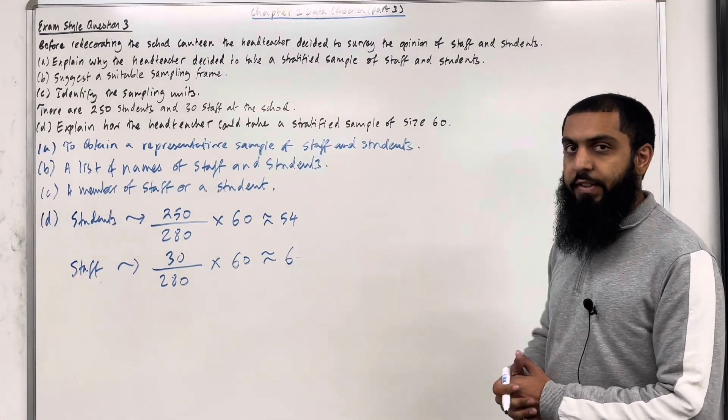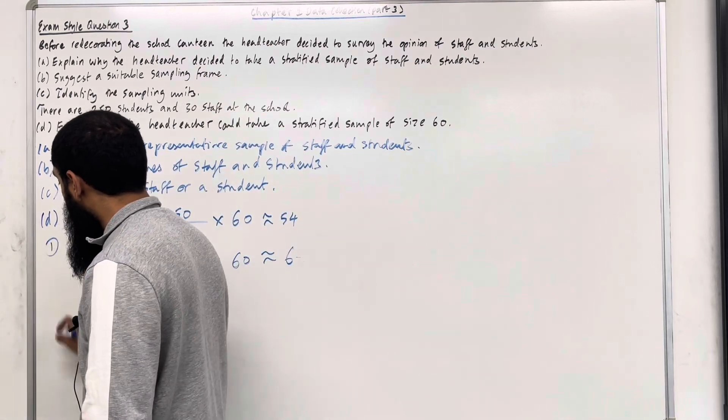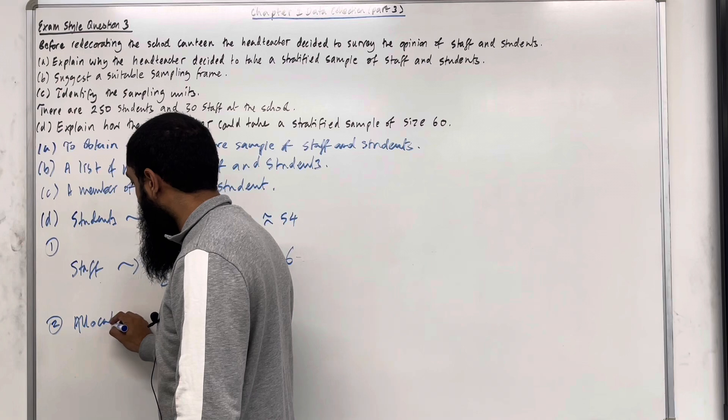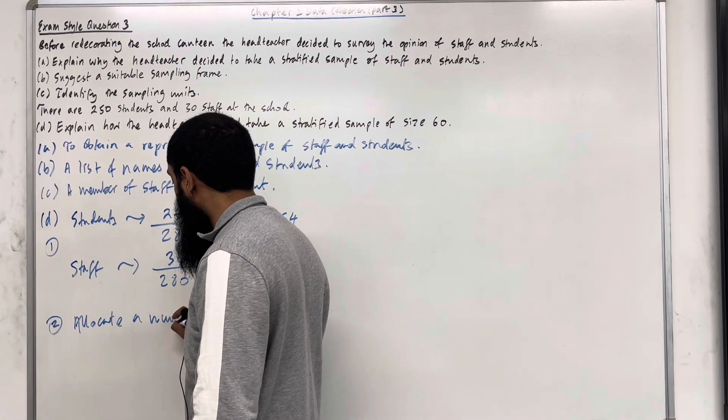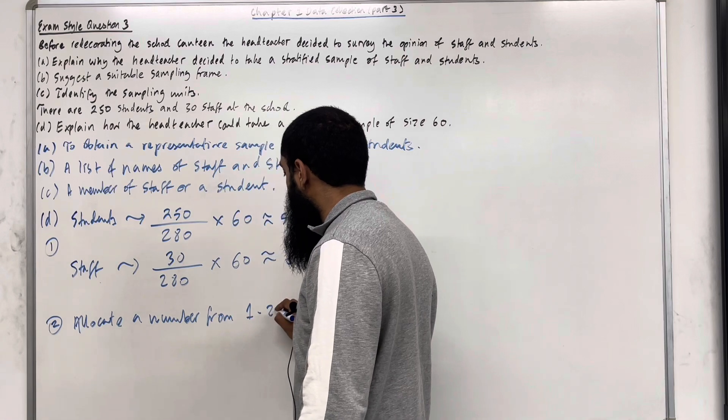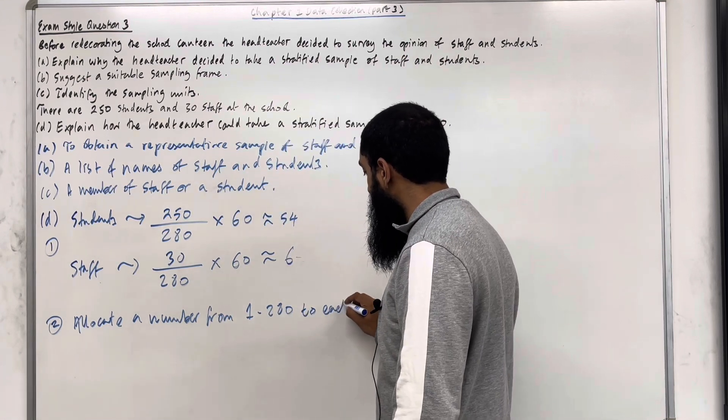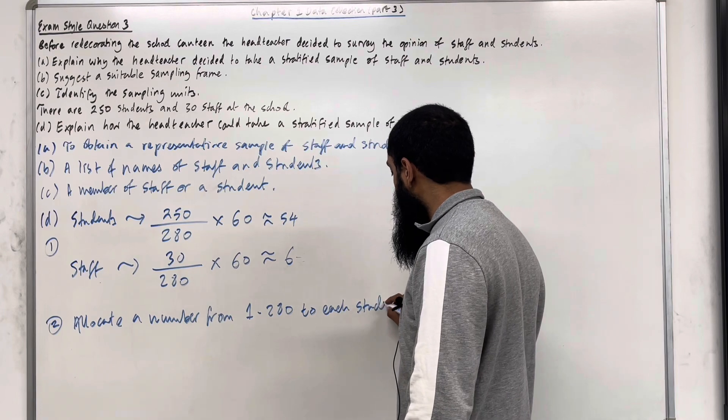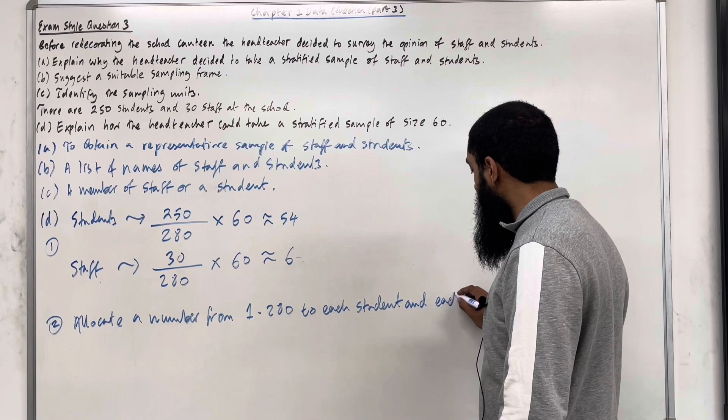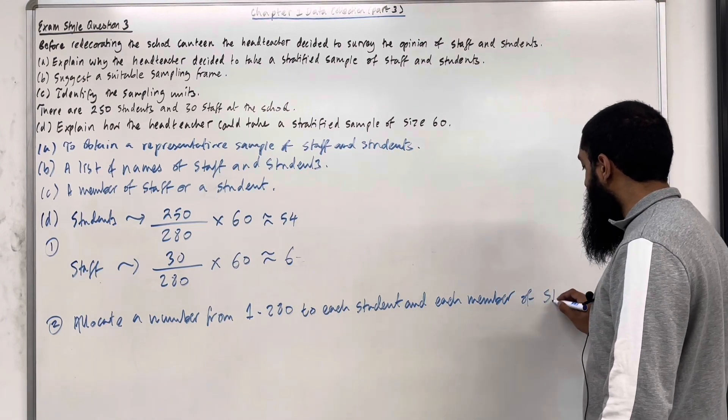Okay, so that there is the first step. Step number 1. Step number 2: Allocate a number from 1 to 280 to each student and each member of staff.